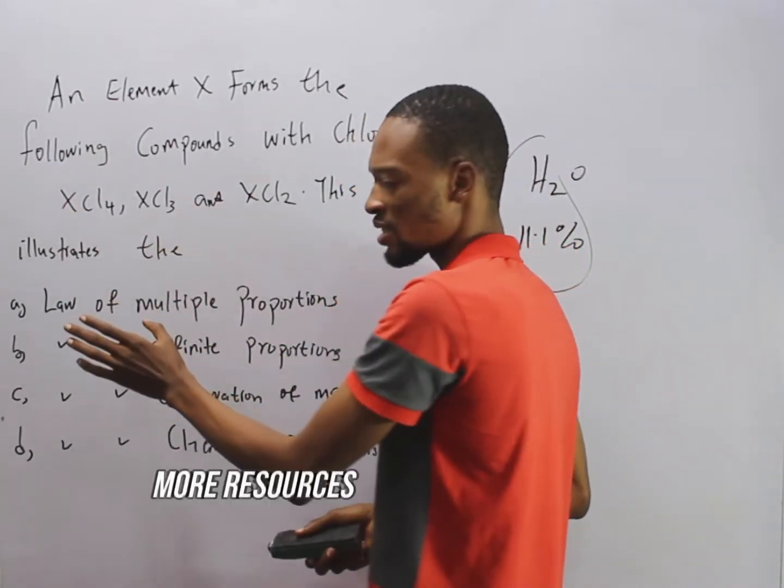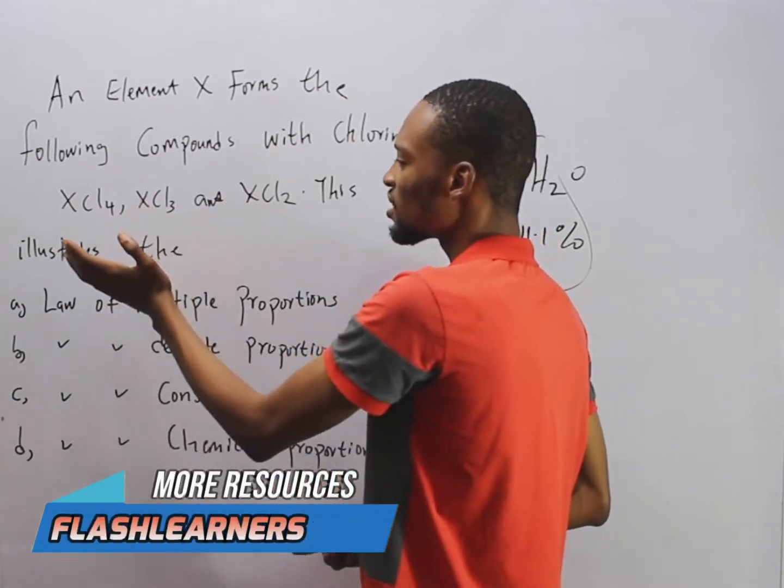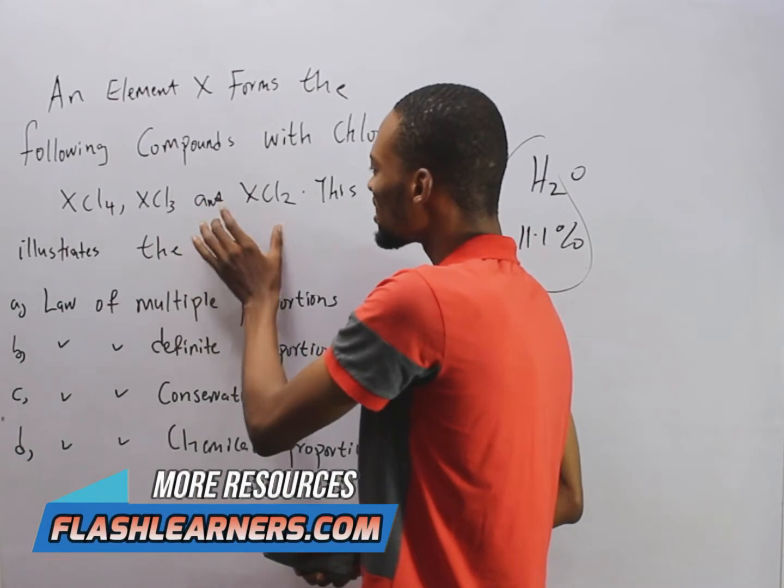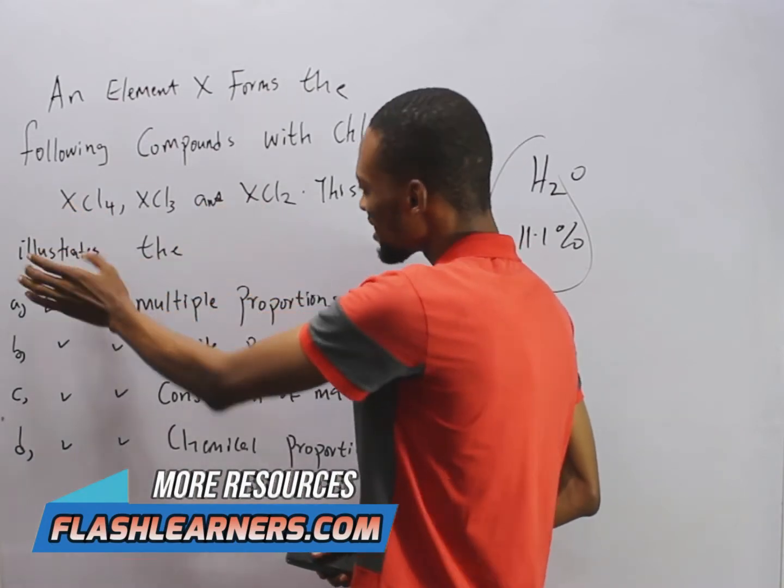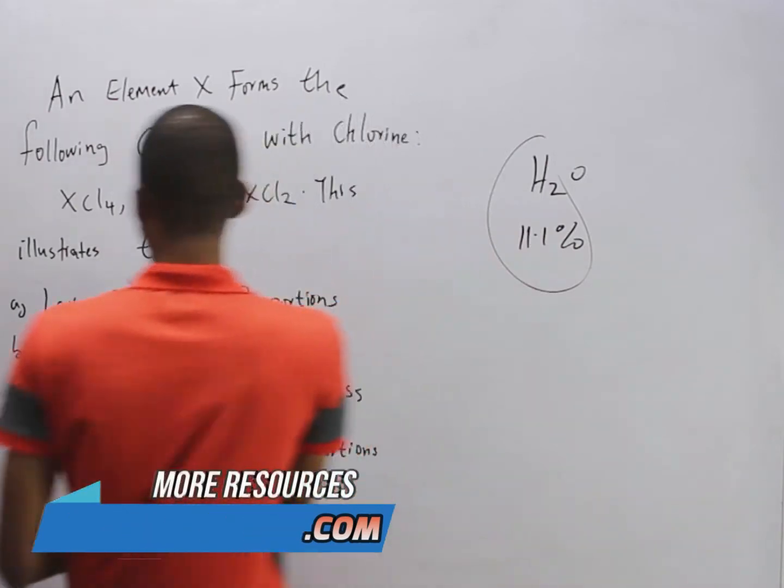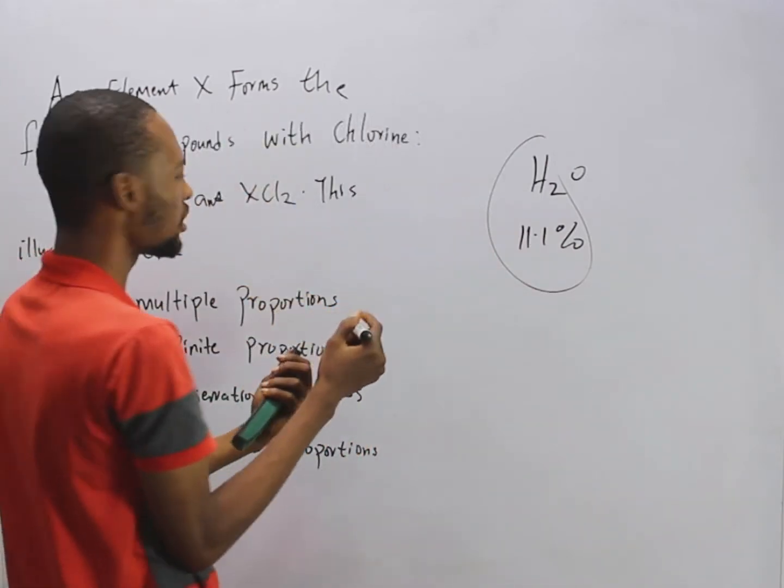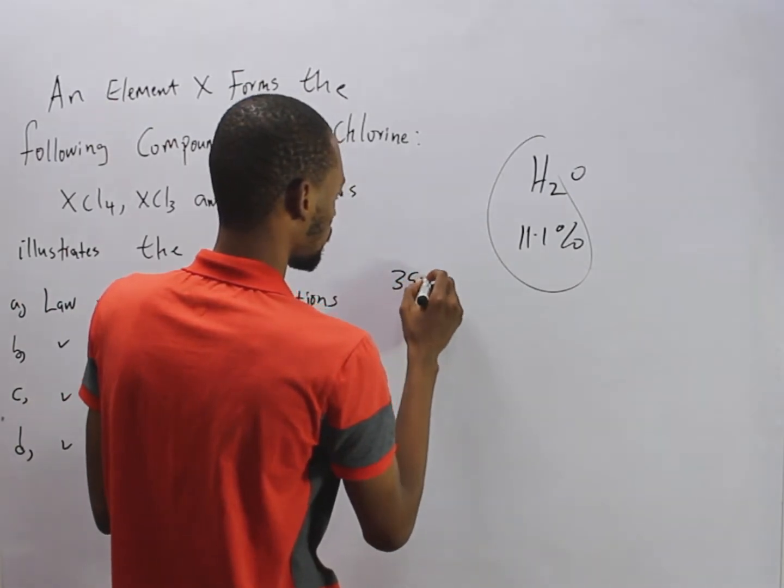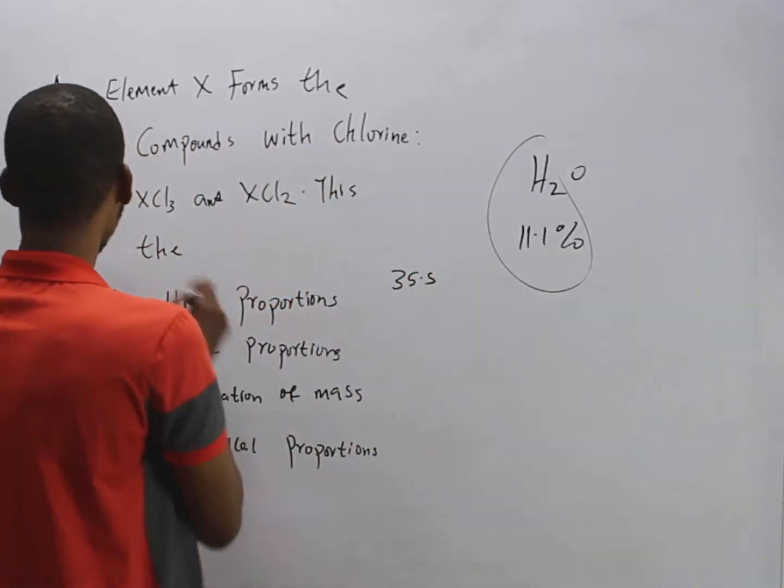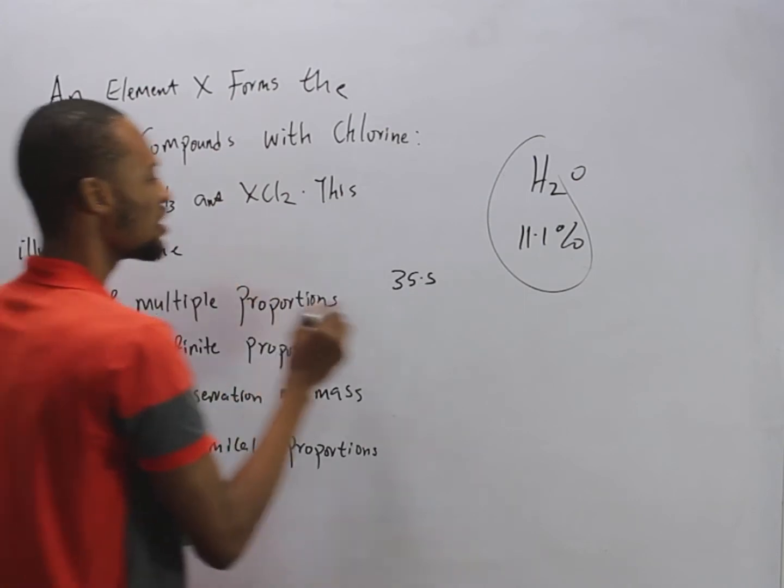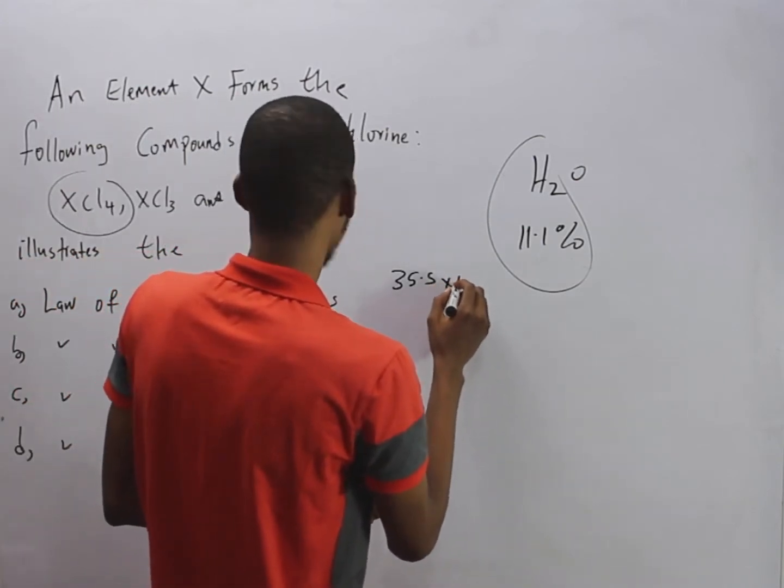This one has a fixed mass, while chlorine reacts with it with different masses. So the mass of this chlorine that reacts with a fixed mass of this element, X, are in simple multiple proportions. This means that, remember the mass of chlorine is 35.5. So the mass of chlorine that reacts with this element here is simply 35.5 times 3.